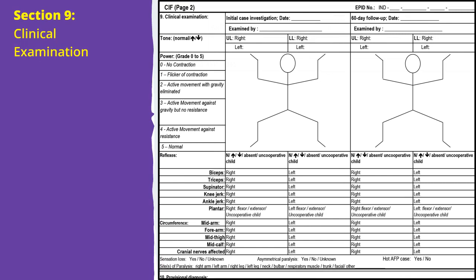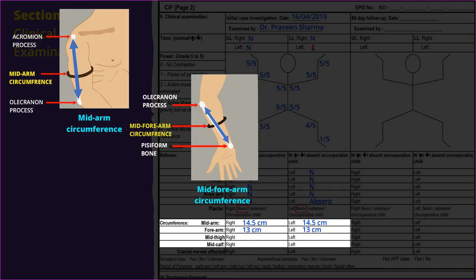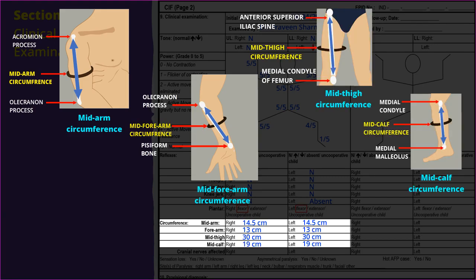Section 9 is an important section in AFP case investigation and should be done accurately for all notified cases. First, assess the tone as normal, increased, or decreased, followed by power at every joint graded from 0 to 5. Elicit the biceps, triceps, supinator, knee, ankle, and plantar reflexes. Take mid-arm, forearm, mid-thigh, and mid-calf measurements to assess any wasting due to paralysis.